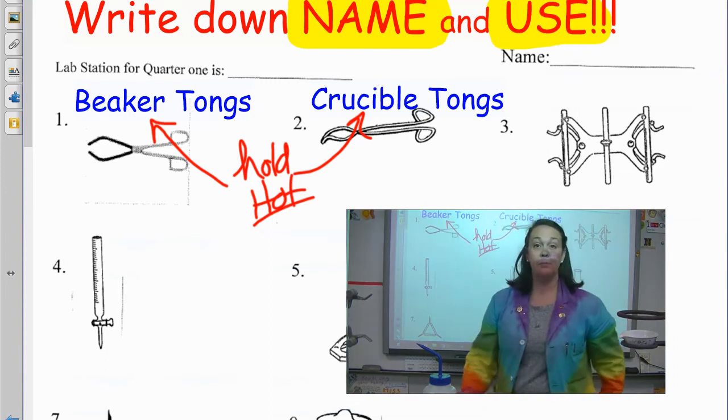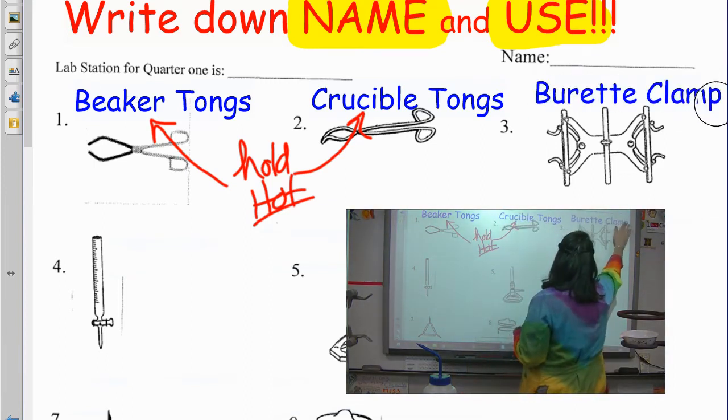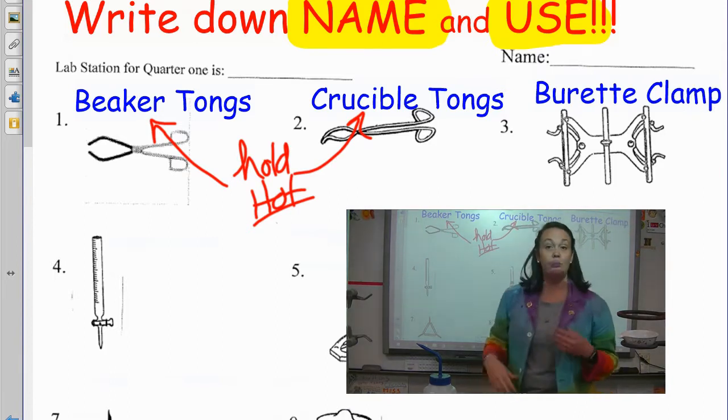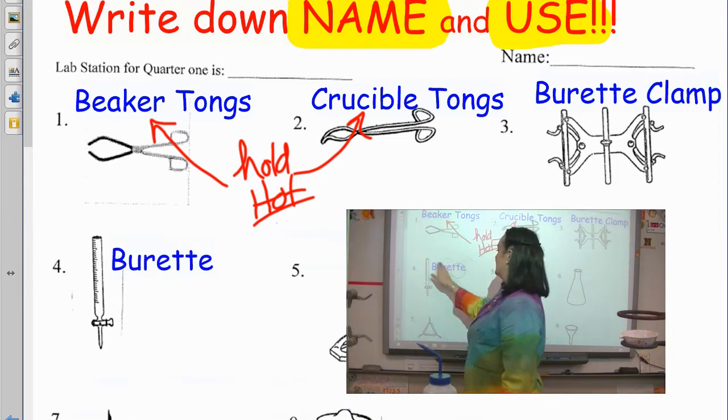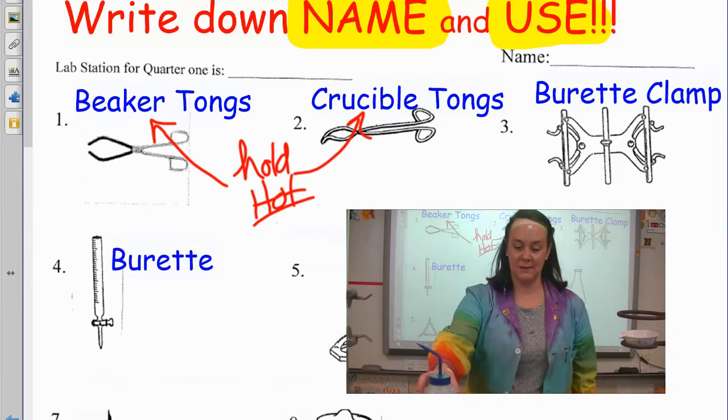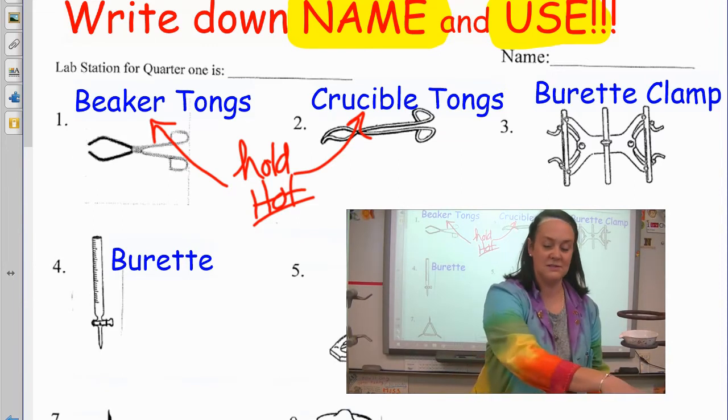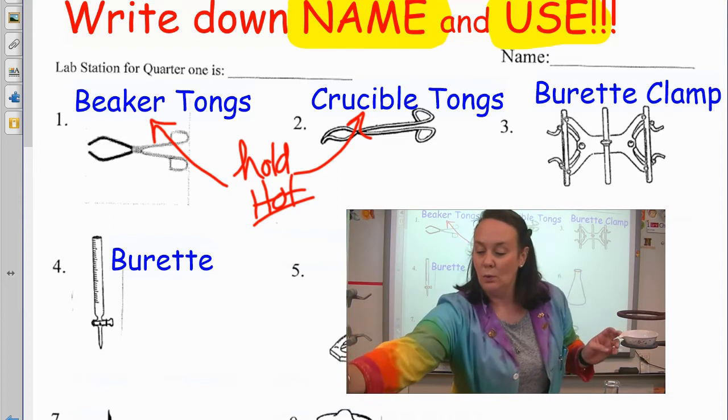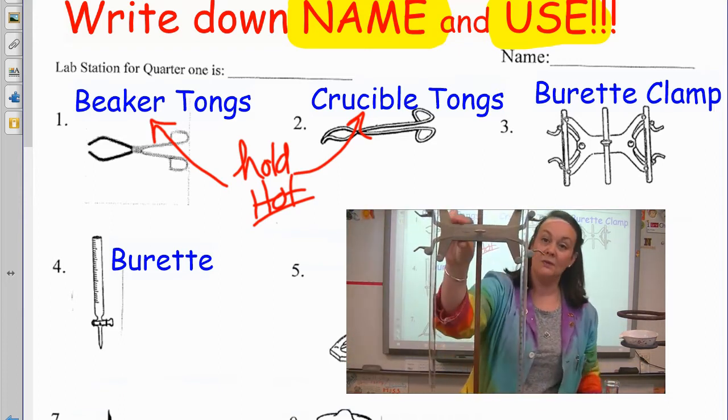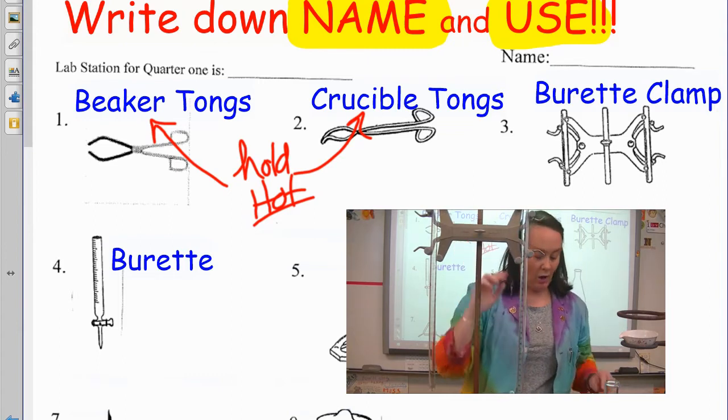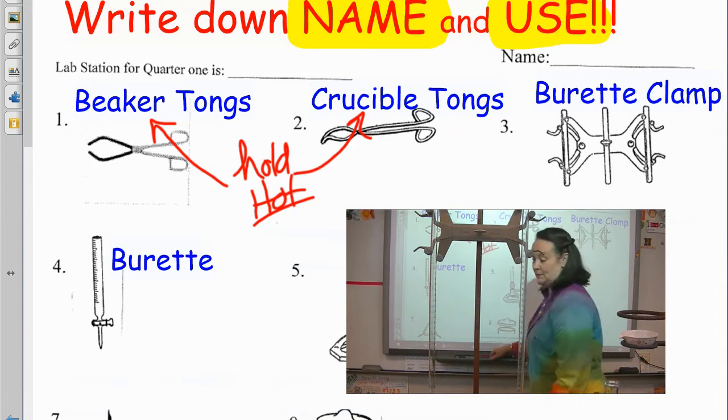Let's see. The next thing we got here is called a burette clamp. A burette clamp. While you're doing the burette clamp, you might as well go ahead and write the part that goes with it. And that's called a burette. We will be using these in stoichiometry, hopefully in the second semester. And a burette and a burette clamp is a little something like this. This clamp, all I would say for the use of the burette clamp is that it holds the burette.